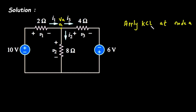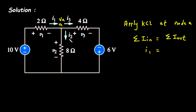Apply KCL at node A. According to KCL — Kirchhoff's current law — the summation of all currents entering a node equals the summation of all currents leaving the node. At this node, the entering current is I1, so we write I1 equals I2 plus I3, since I2 and I3 are the two leaving currents.